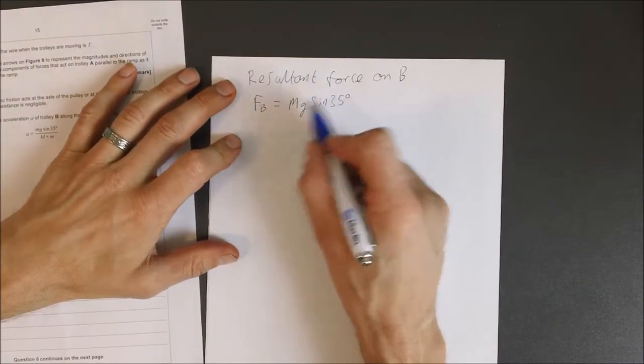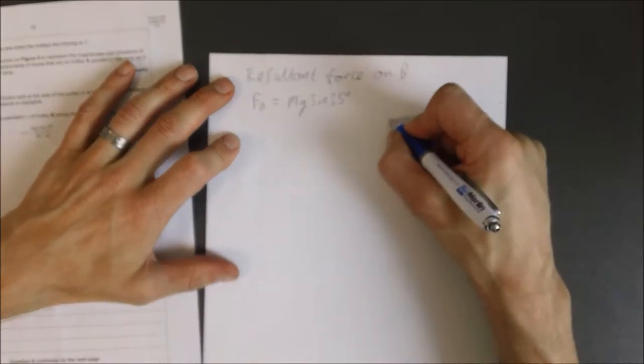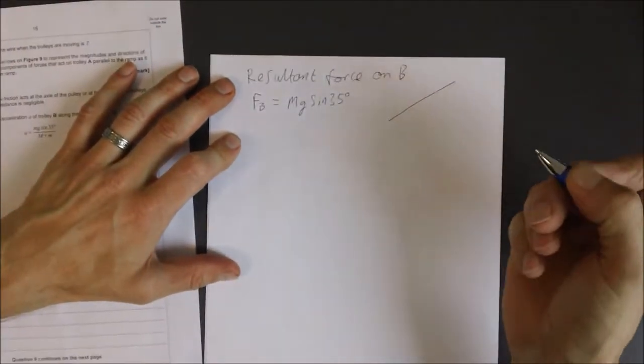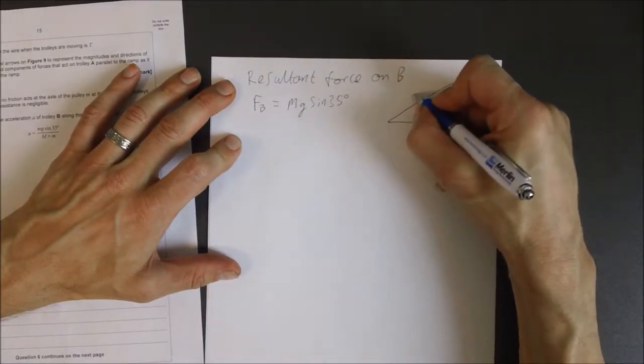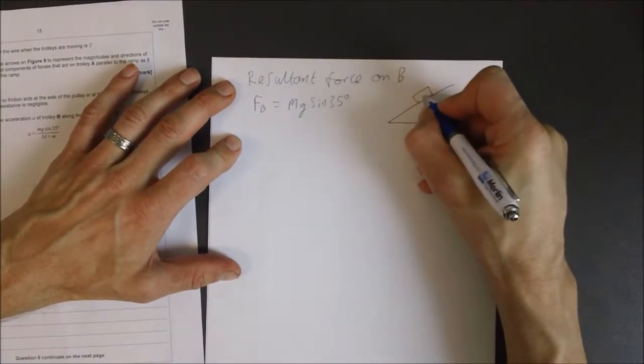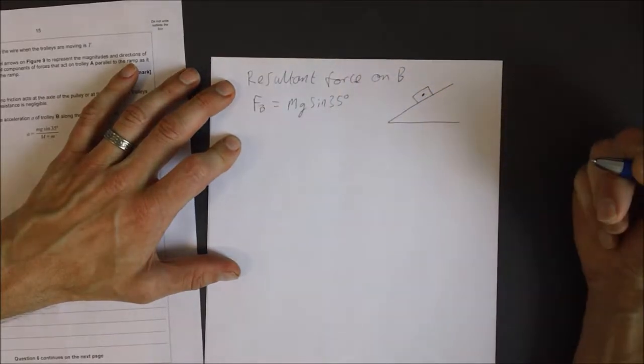So you might be wondering why it's sine 35. Well, the way I like to draw this, there are many other ways I'm sure you'll have learned in maths, but here I've got the slope here and there's my trolley. I'm just going to ignore the wheels and treat it as a regular object. I'm going to draw the centre of mass on there.